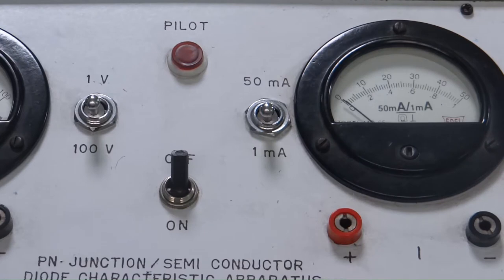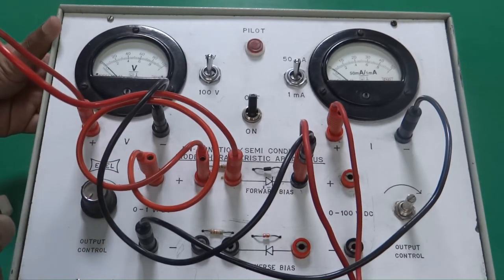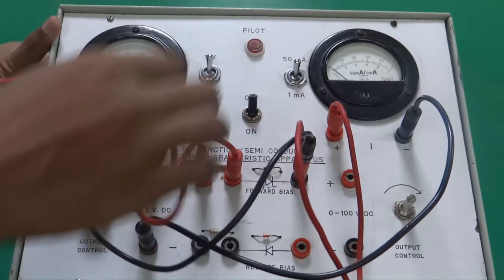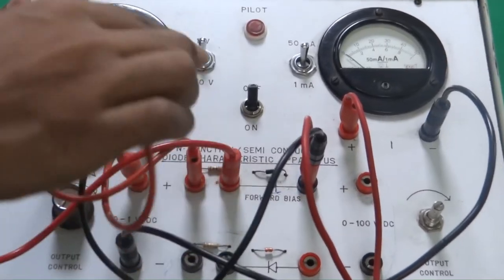Now let's do the setup for the forward bias. This is how we will make the connections for the forward bias. From the supply, the positive terminal, it goes to the P side of the diode.